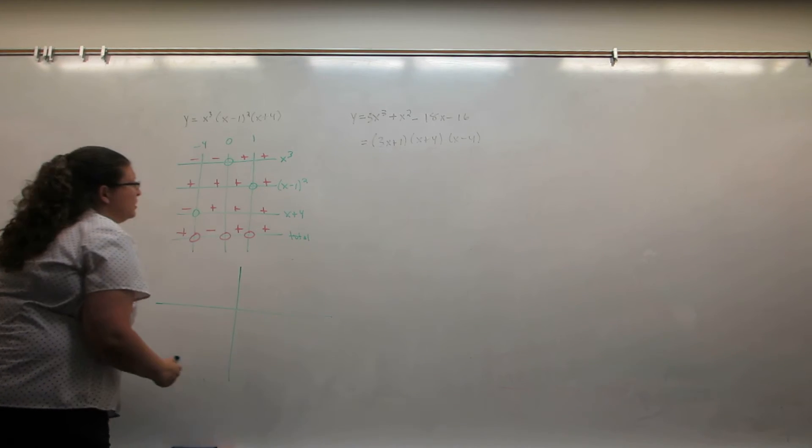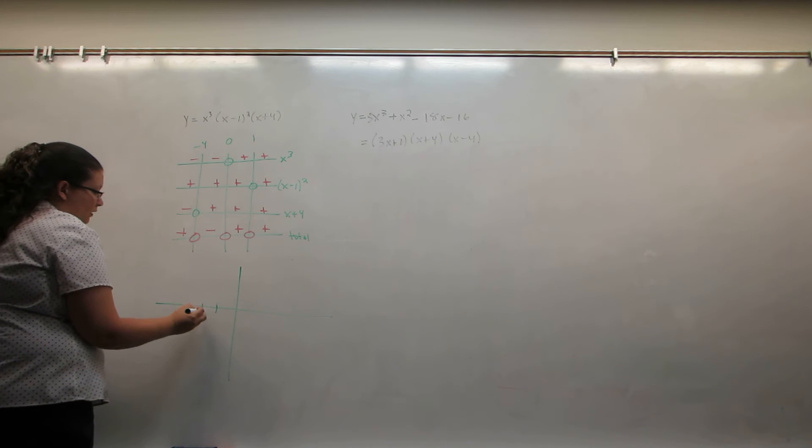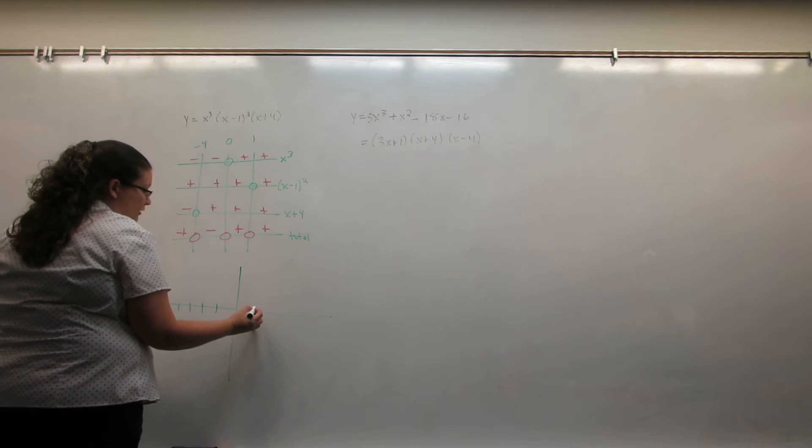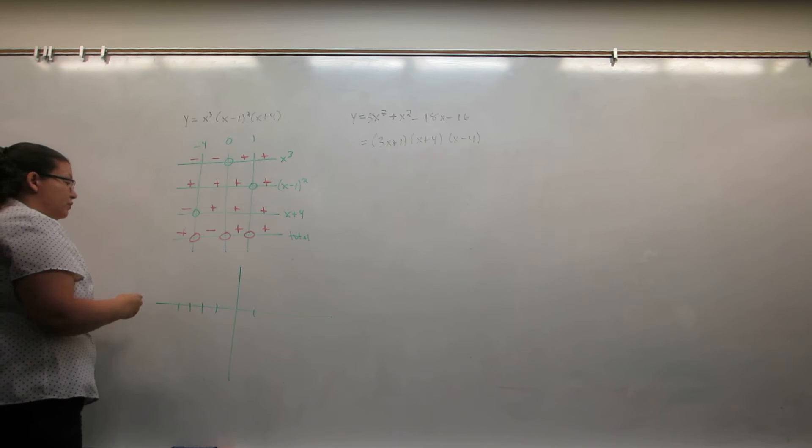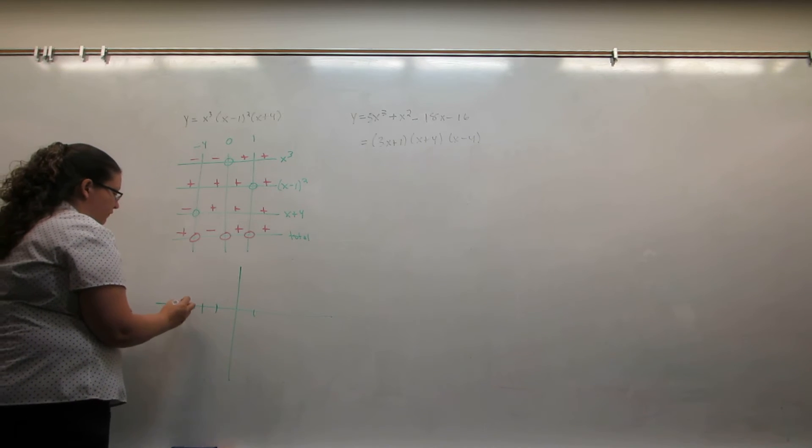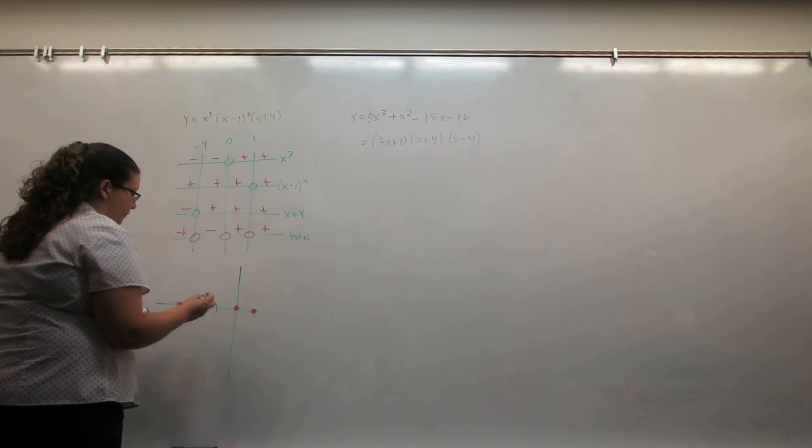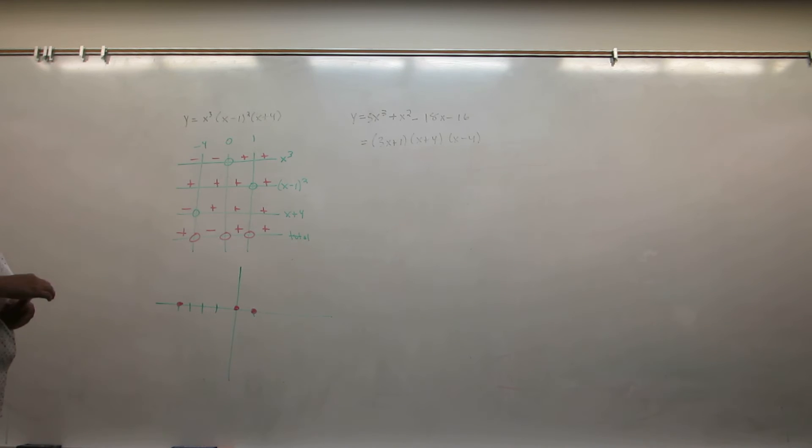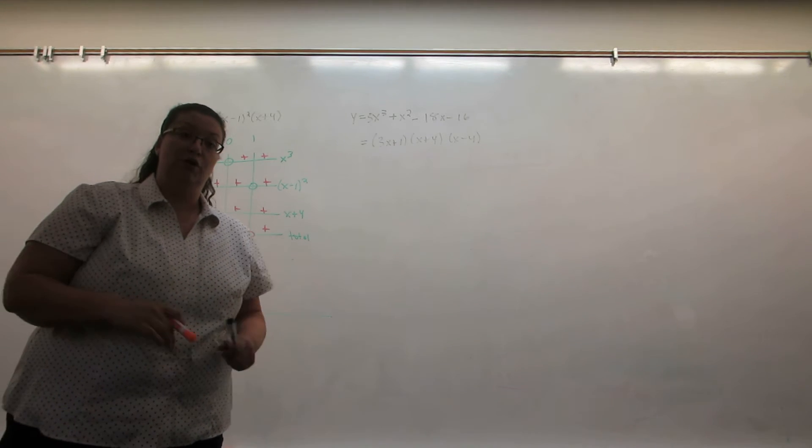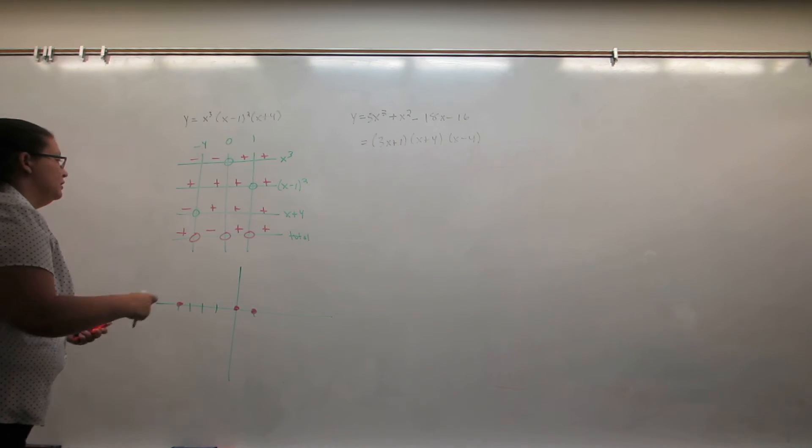So, I'm going to start by plotting the places where the graph equals zero. Those are our intercepts. So negative four, zero and one. And now, I'm going to use the sign chart to fill in the rest of the graph. Remember, we're graphing polynomials and polynomials have to look like roller coasters. So keep that in mind as we graph.